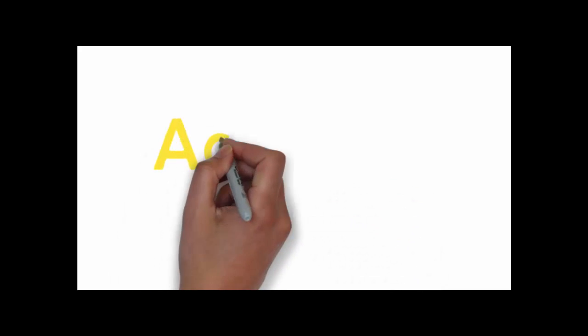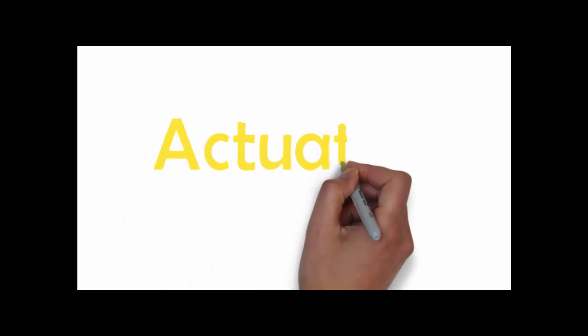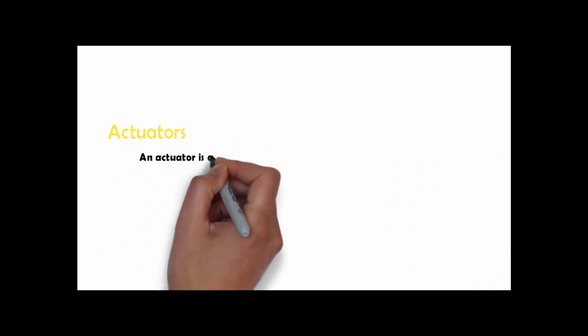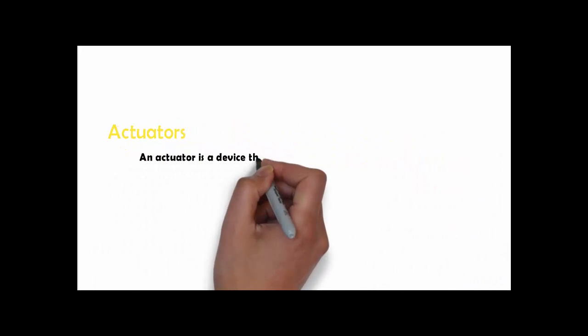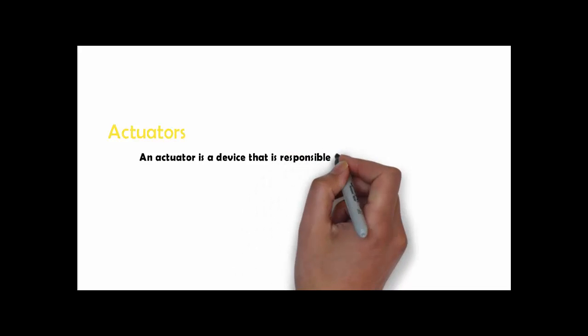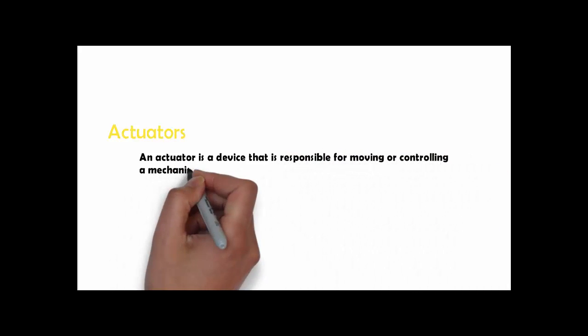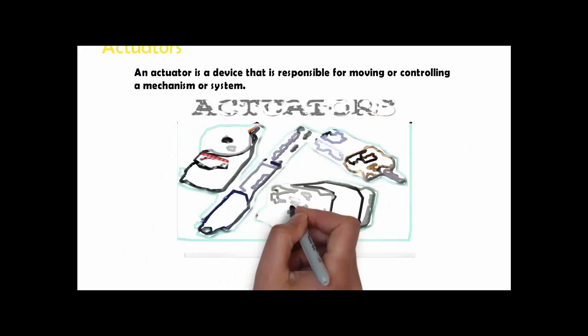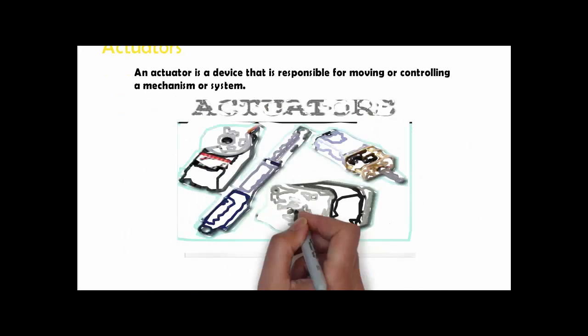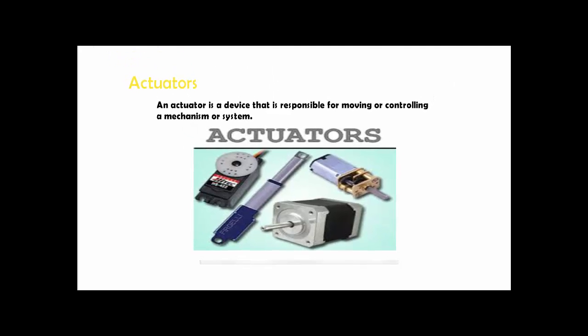I used the word actuator — let me tell you about this. An actuator is a device that is responsible for moving or controlling a machine or system. It is operated by a source of energy, which can be mechanical force, electrical current, hydraulic fluid pressure, or pneumatic pressure, and converts that energy into motion. Here is how an actuator looks like.